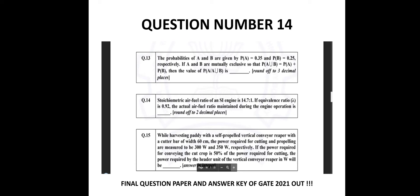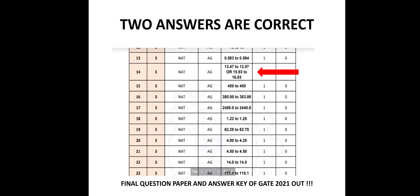In question number 14, the stoichiometric air-fuel ratio of an SI engine is 14.7 to 1. If the equivalence ratio is 0.92, the actual air-fuel ratio maintained during engine operation is—and the answer is 13.47 to 13.57 or 15.93 to 16.03.